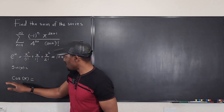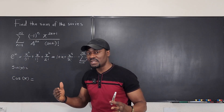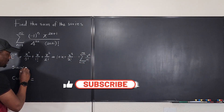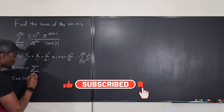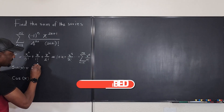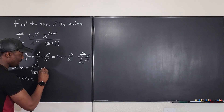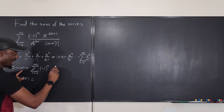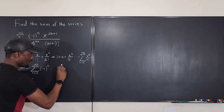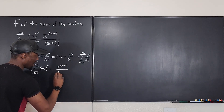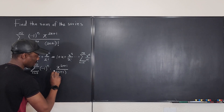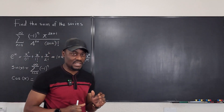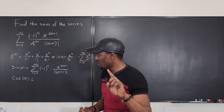The Taylor series representation of sine of x is the sum from n equals zero to infinity of negative one to the n, multiplied by x to the power (2n + 1), divided by (2n + 1) factorial. This is the standard form you must memorize.